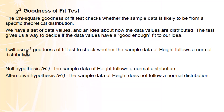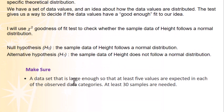I will use the chi-square goodness-of-fit test to check whether the sample data of height follows a normal distribution. The null hypothesis H0 is that the sample data of height follows a normal distribution. The alternative hypothesis H1 is that the sample data of height does not follow a normal distribution. Make sure the data set is large enough so that at least five values are expected in each observed data category. In this case, at least 30 samples are needed.